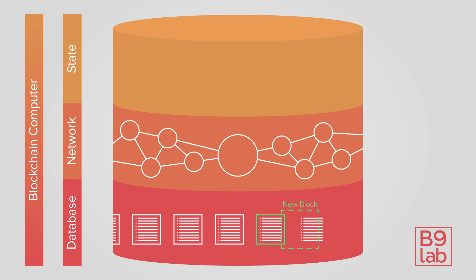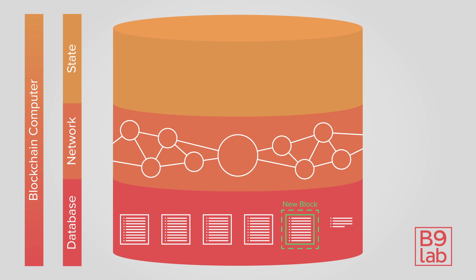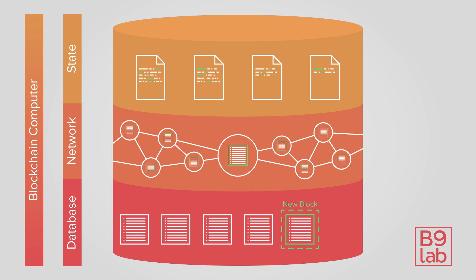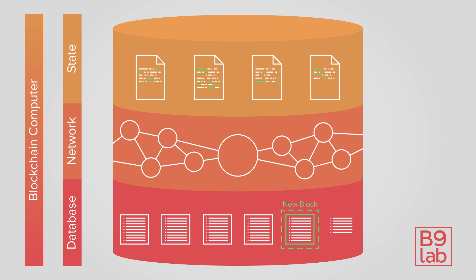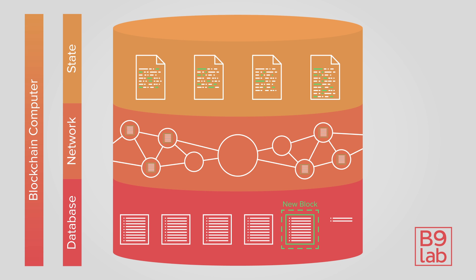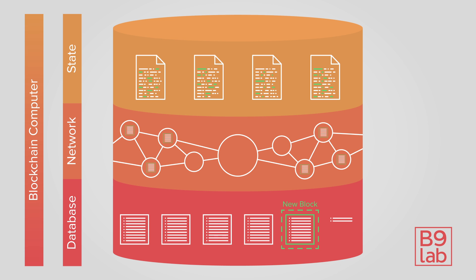Every new block spreads through the network and is downloaded by every node. The blockchain computer becomes possible if we think of every new block as an update to the state of this virtual network computer. Transactions can contain computational steps that influence or create new smart contracts. Smart contracts are our gateway to interact with a list of transactions that are associated with it and form its state.